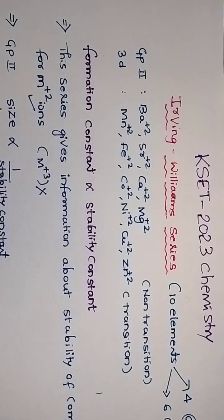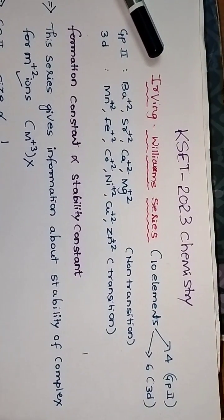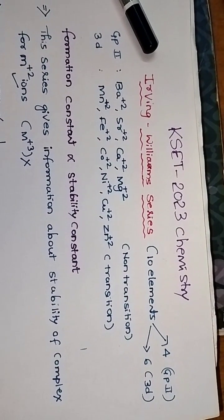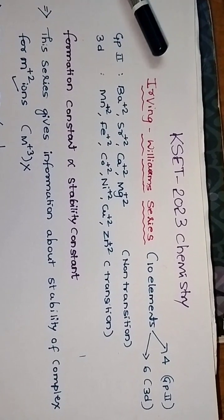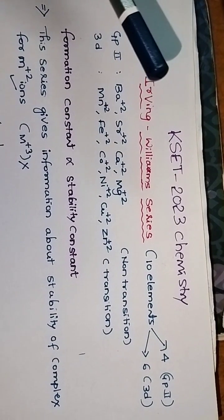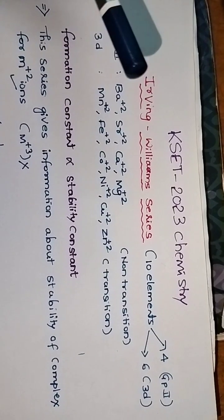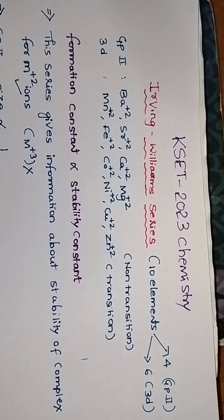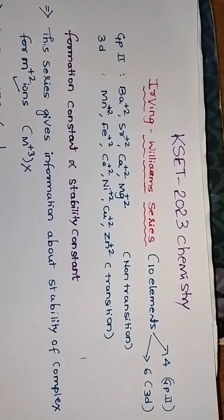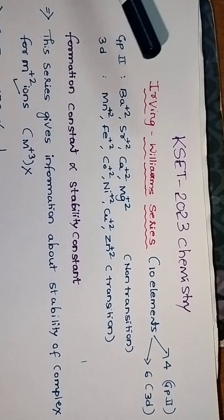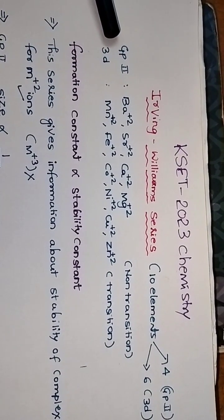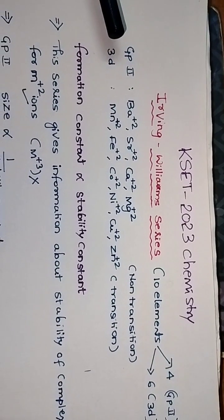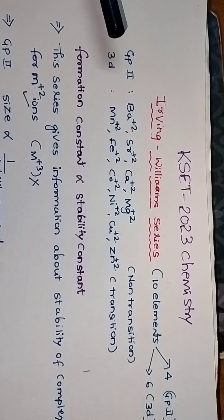First, they've asked in Irving-Williams series how many elements are there. There are 10 elements: 4 in group 2, the alkaline earth metals, and 6 in the first 3d series d-block elements. Group 2 includes barium, strontium, calcium, magnesium—that's non-transition. 3d includes manganese, iron, cobalt, nickel, copper, zinc—that's transition.